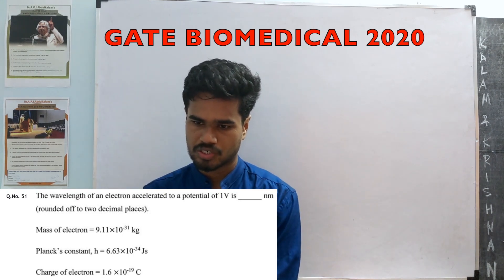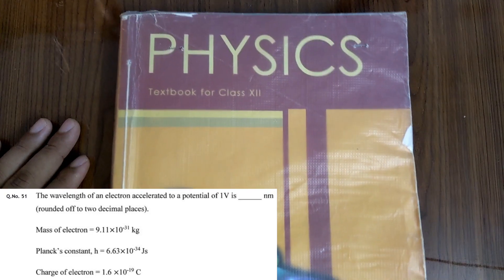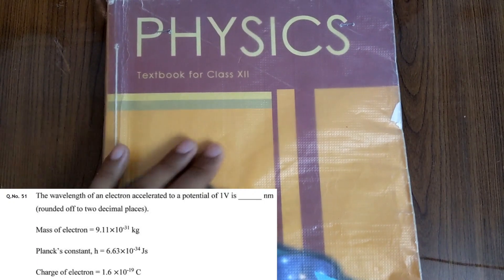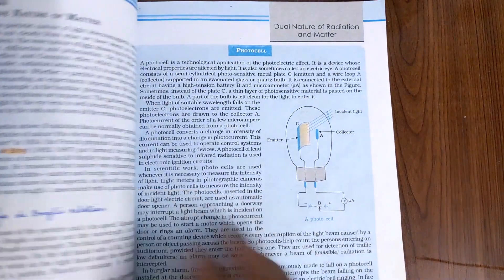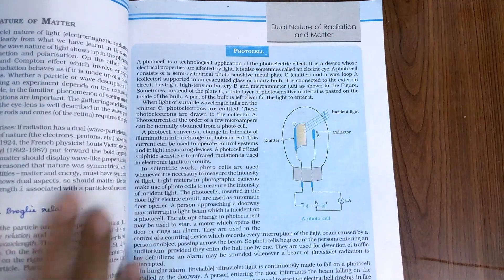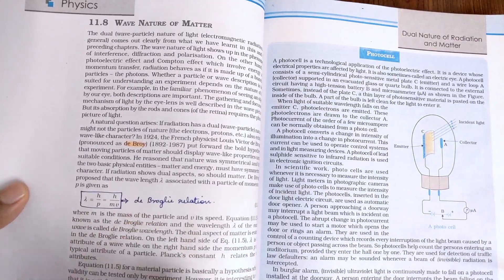Mass of electron, Planck's constant, and charge of electron are given. Just so you guys know, this is a question directly from 12th standard NCERT textbook, and we have this chapter on dual nature of radiation and matter which talks about wavelength of particles when they have momentum.